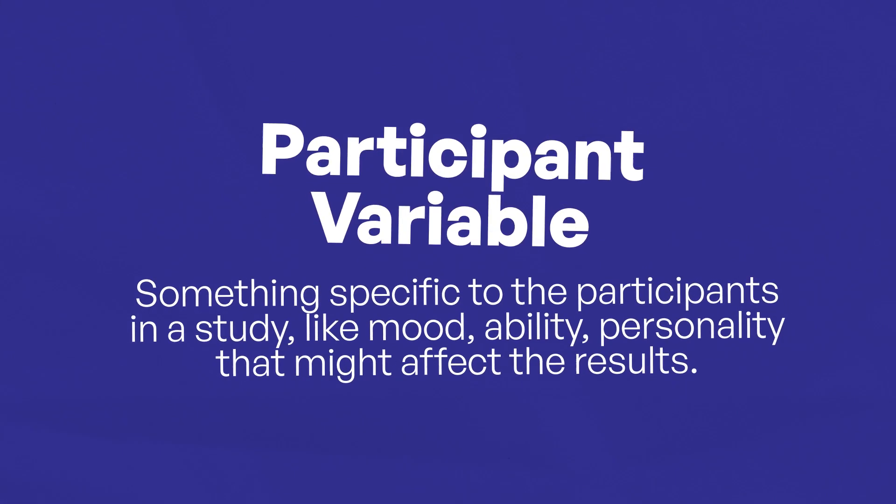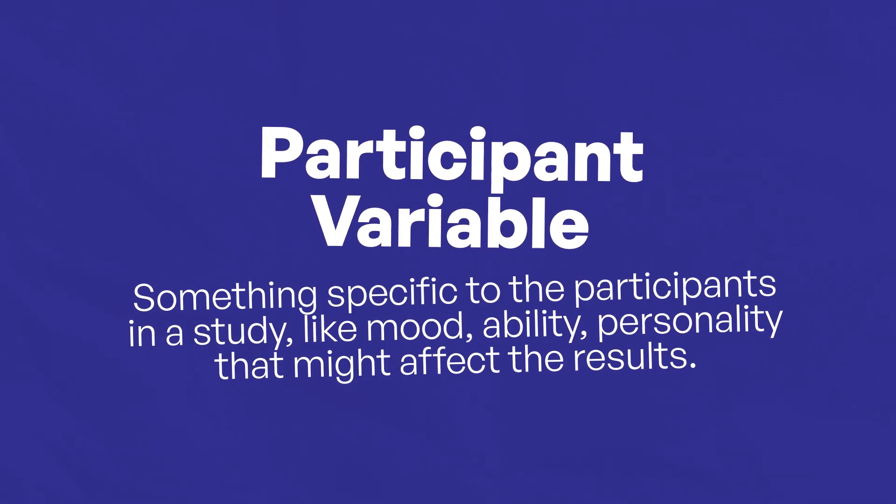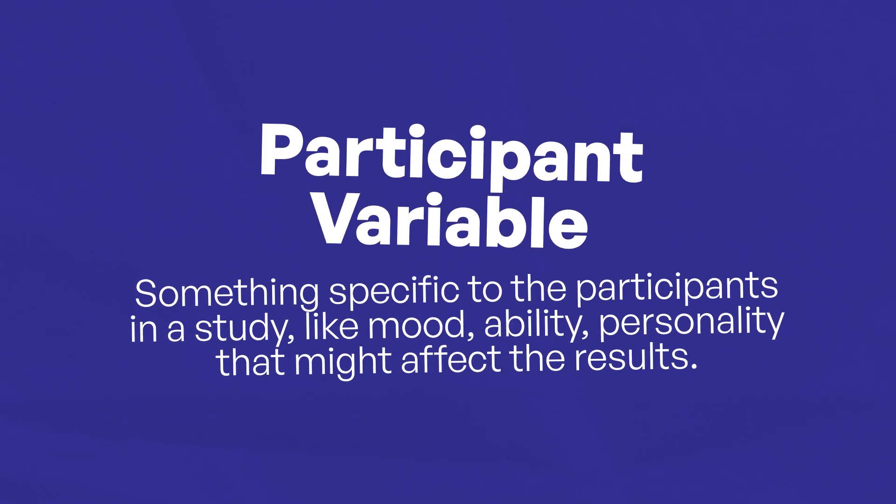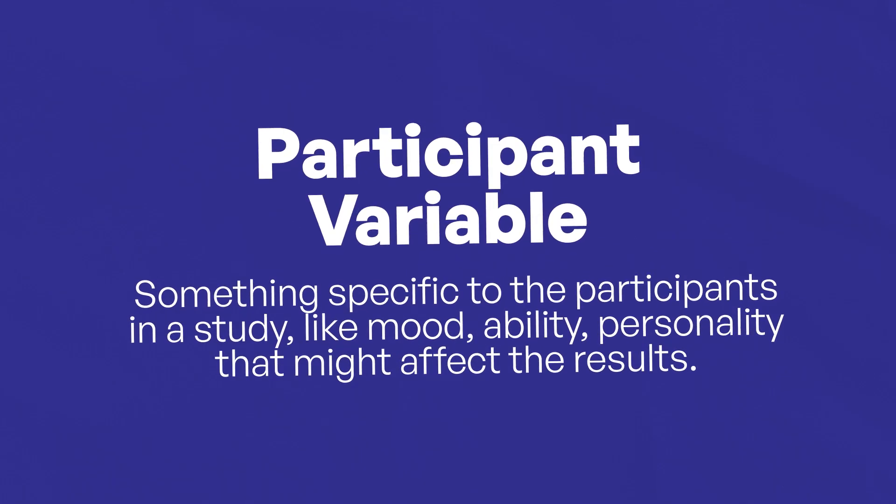You might be thinking: what about the participants themselves? And you'd be absolutely right — we need to think about participant variables. What if one of the participants is a world-class mathematician? Or another just got some really bad news? Or maybe one forgot to bring their glasses and can barely see the test? Things like this would affect the results. A participant variable is something specific to the participants in a study, like mood, ability, or personality, that might affect the results.